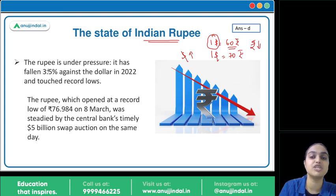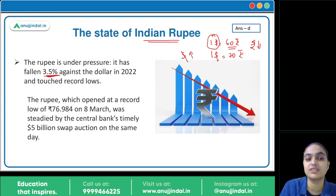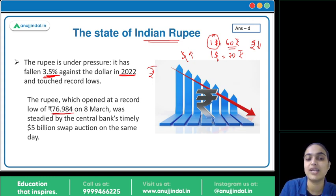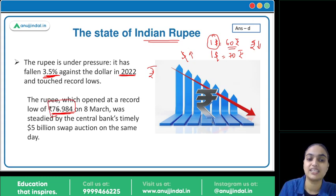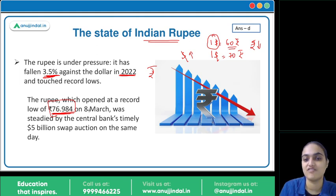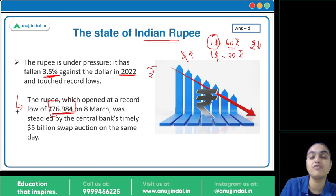Recently we are seeing a major fall in the value of rupee vis-à-vis the dollar — a 3.5% fall in 2022. Rupee vis-à-vis dollar has touched record low values; on 8th March it reached 76.984. RBI has been conducting sell-buy swaps which helped it be a little steady, but otherwise we have seen a consistent fall in the rupee.